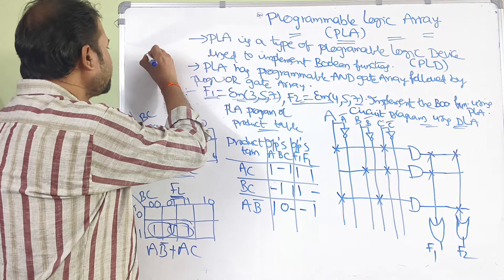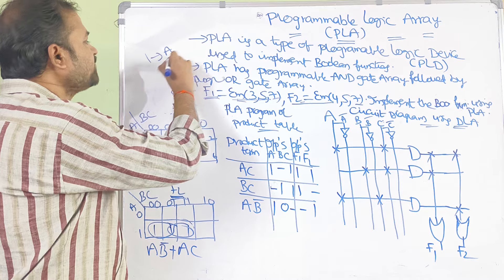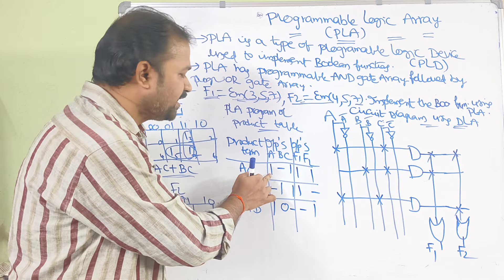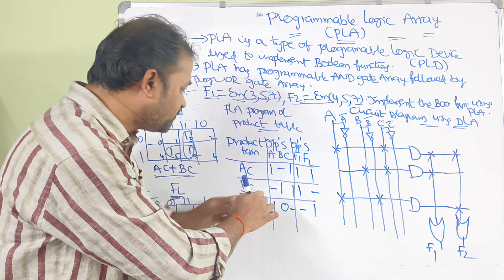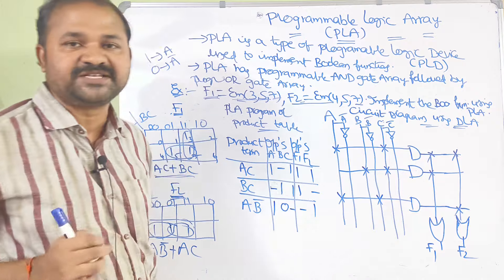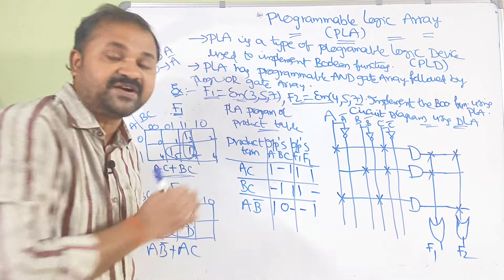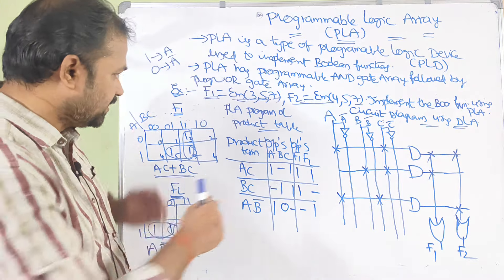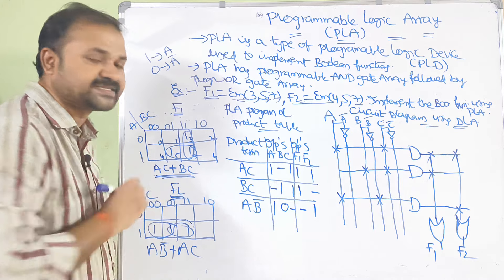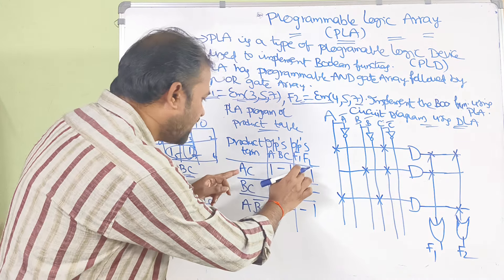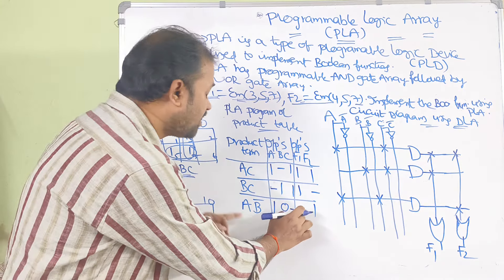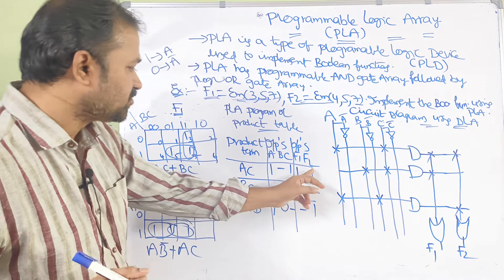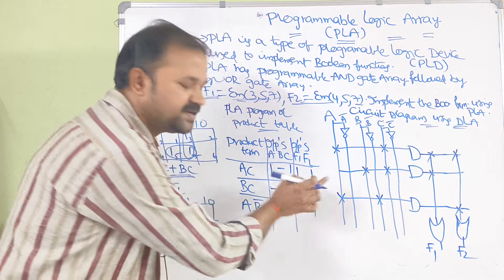This is sum-of-products form. In SOP form, a variable present means 1 and a complemented variable means 0. For AC: A=1, B is missing (hyphen), C=1. For BC: A is missing (hyphen), B=1, C=1. For AB̄: A=1, B̄ means B=0, C is missing (hyphen). For outputs: F1 = AC + BC, so AC gets 1, BC gets 1, AB̄ gets a dash. F2 = AB̄ + AC, so AC gets 1, BC gets a dash, AB̄ gets 1.